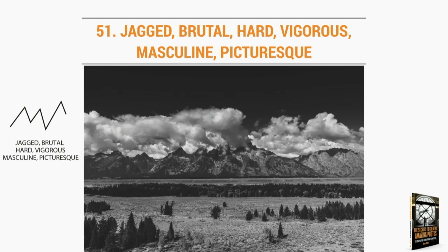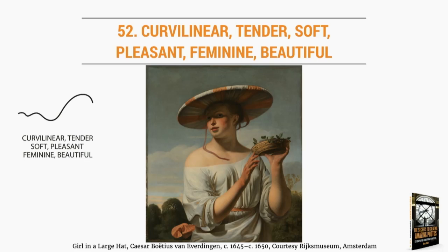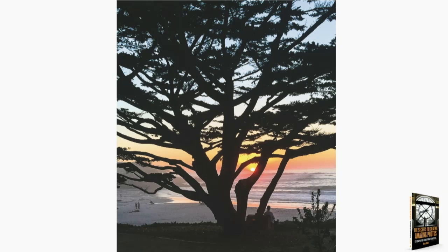I love this painting, Girl in a Hat, from around 1645. That curvy line gives you the feeling of tender, soft — curvilinear means curvaceous, curvy. Marilyn Monroe, pleasant, feminine, beautiful. If you're taking a portrait and you really want to enhance that in a woman, you might have her wear a big hat. Whatever your subject is, you can do that even with objects — like this tree follows the same thing. You get the feeling of that curviness, there's beauty there, that warm sense going on.